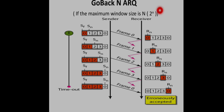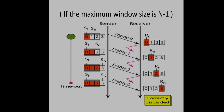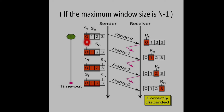So capital N should be at most 2^n − 1, where small n is the number of bits in the sequence number. Let us take the same case: n = 2 bits, so 2^n = 4, but the window size should be maximum 3. Here is an example with sender window of size 3: frames 0, 1, 2 are the current window, and the receiver window is also size 3. The sender sends frame 0 and waits to send 1 and 2.